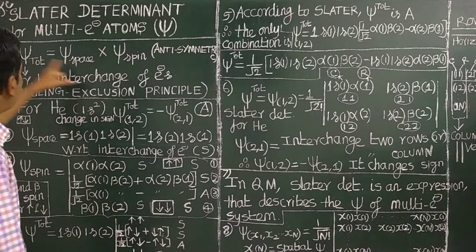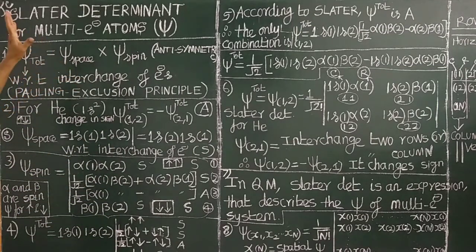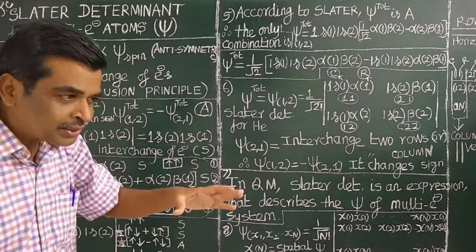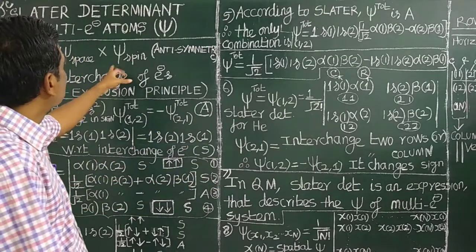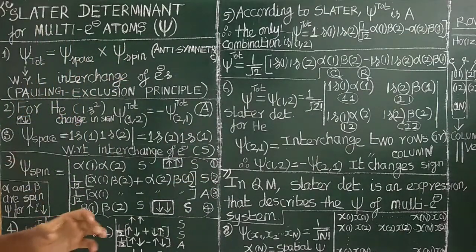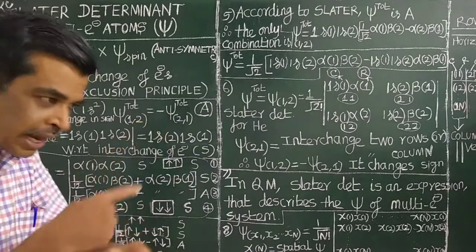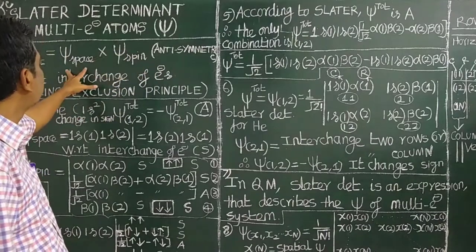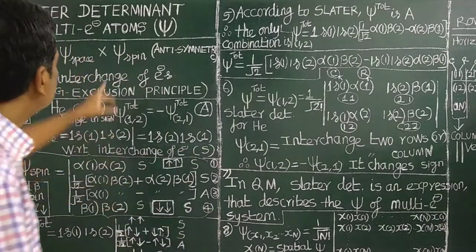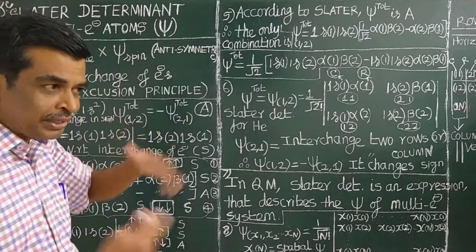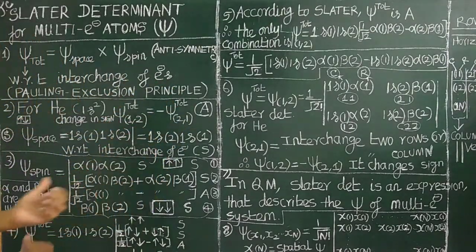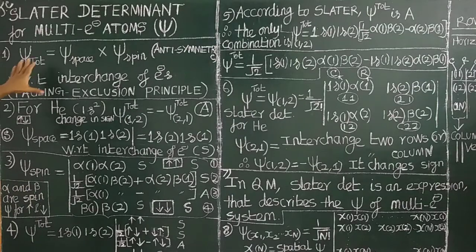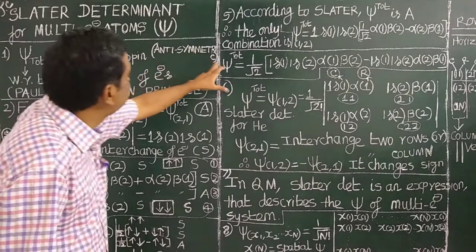The total wave function, according to Slater, is the product of the spatial part of the wave function and the spin wave function. When an electron is moving in an atom, it will have orbital motion as well as spin motion. Orbital motion is nothing but spatial motion, and there is spin motion due to spin angular momentum. According to Slater, the total wave function is anti-symmetric.